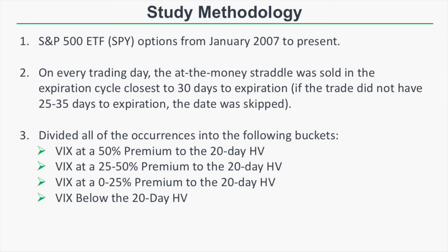Here is how we conducted our research. We looked at S&P 500 ETF options — specifically SPY options — over the period from January 2007 to April 2017. On every single trading day, we looked at the at-the-money straddle with the expiration cycle closest to 30 days to expiration, specifically between 25 and 35 days to get more occurrences. We recorded data as if we had sold these straddles, so all profitability metrics are from the short side.